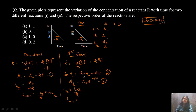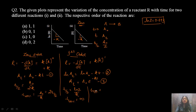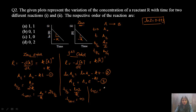For first order reactions, 100% completion is never reached because ln(0) is undefined. At 75% completion, three-fourths of the reaction has been completed and concentration of reactant is A₀/4; this takes 2t½ = 2·ln2/K. For 87.5% completion it takes 3 times t½.